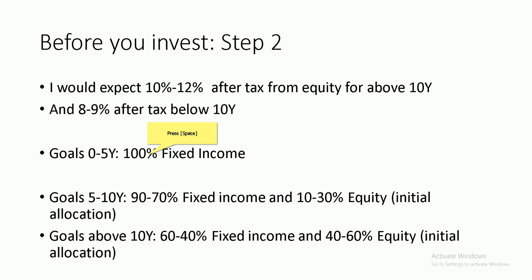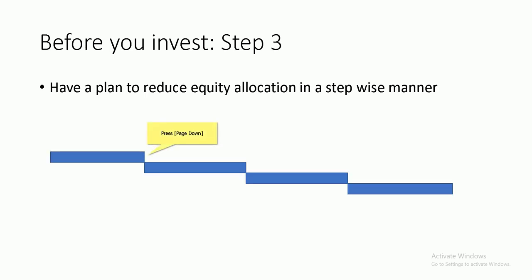For goals between 5 to 10 years, I would recommend an asset allocation of 90 to 70% fixed income and the rest in equity. For goals above 10 years, I would recommend 60 to 40% fixed income and 40 to 60% equity. Please note these are the initial allocations. You cannot hold that much equity right until you need the money because it will be too risky and fluctuate too much. So the third step is to have a plan to reduce equity in a stepwise manner as you progress — tapering it down to zero.